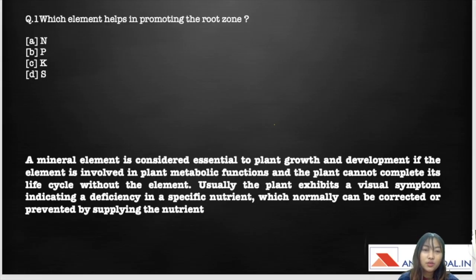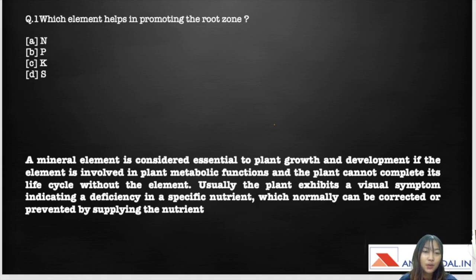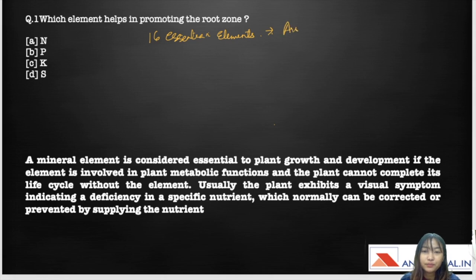Moving on to the first question: which element helps in promoting the root zone? First and foremost we need to understand what a mineral element is. Mineral elements are elements which are essential to the plant for growth and proper development. They help in the metabolic functions of the plant, and without these, the plant cannot complete its normal life cycle. There are 16 essential elements, as given by Arnon and Stout in 1939.